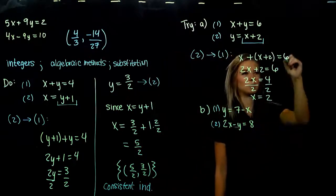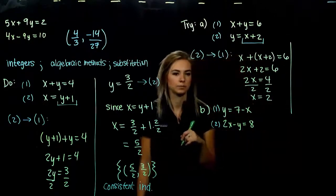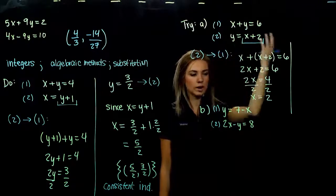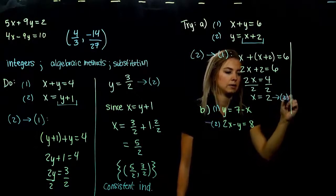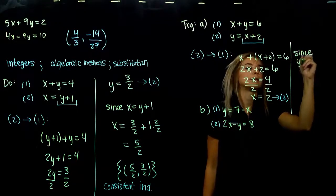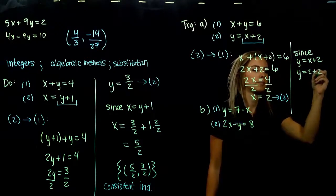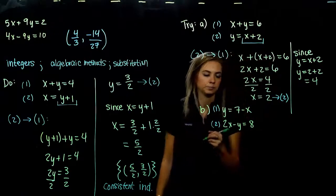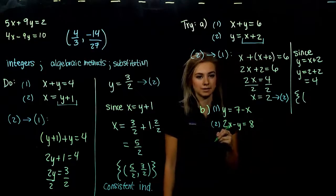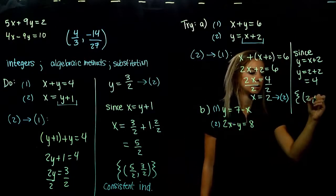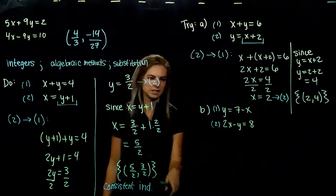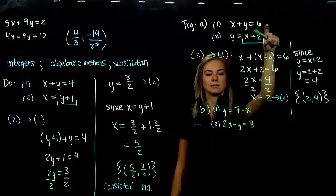That's only half of it — we still need the y-coordinate. Which equation is easiest to substitute back into? Equation 2, because y is already on its own. Since y equals x plus 2, and x is 2, we get y equals 4 altogether. We have one solution — one point that satisfies both equations at the same time. The solution is (2, 4). This is a consistent, independent system — they touch once and are not the same line.